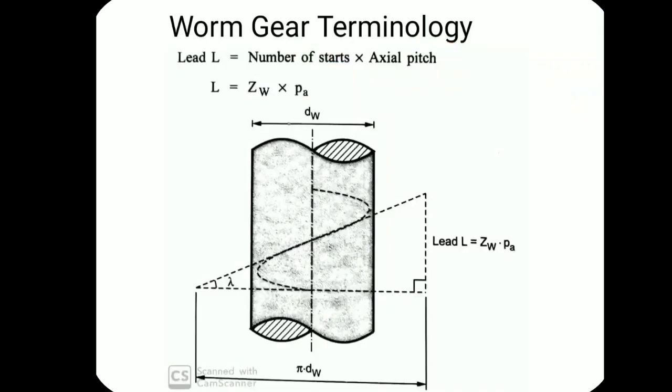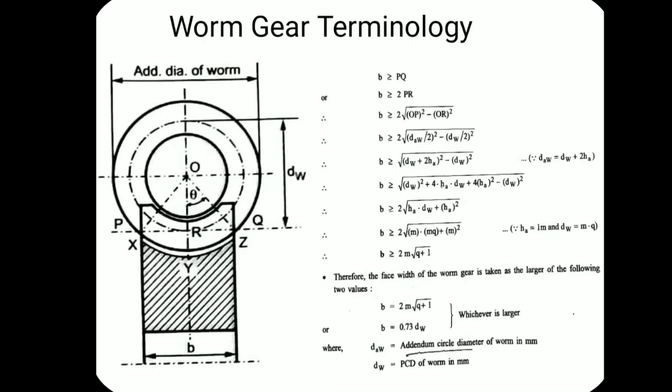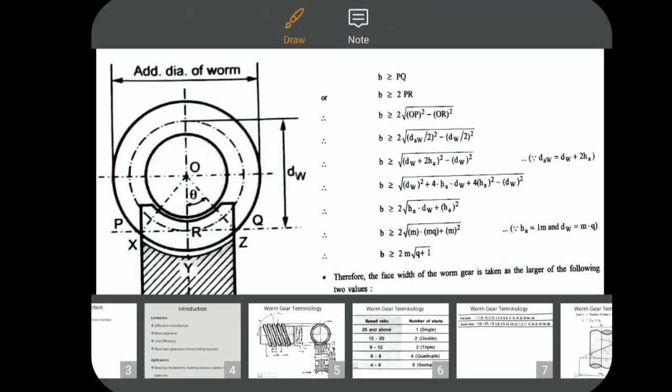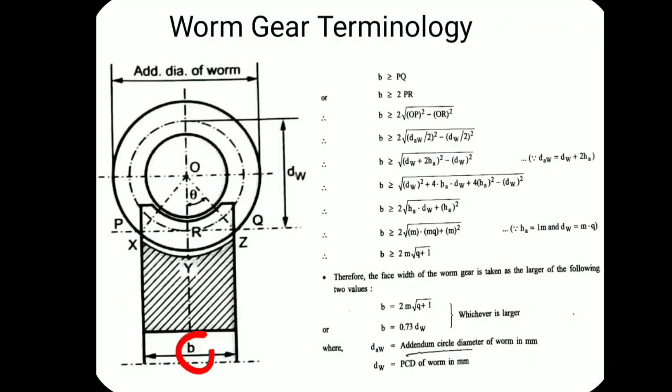Now for worm gear terminology, the next point is face width. Here you can see the face width b. Generally we take 10 times the module, but here what happens — when both are circular that works, but here the worm has a thread-like structure and the gear has a circular structure, so they are not both circular.